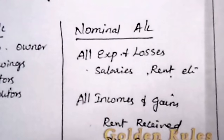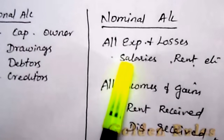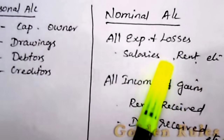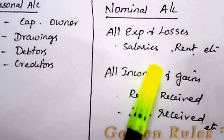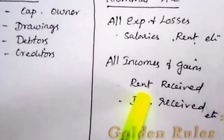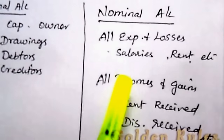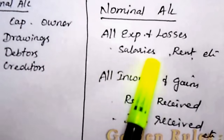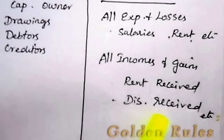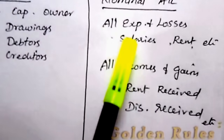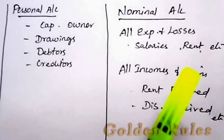Nominal account is very simple. In business you have many expenses and incomes. All expenses — whether direct or indirect — are debited. All incomes and gains are credited. The nominal account rule is: debit all expenses and losses, credit all incomes and gains. For example, salaries and rent are expenses — debited. Rent received and discount received are incomes — credited.